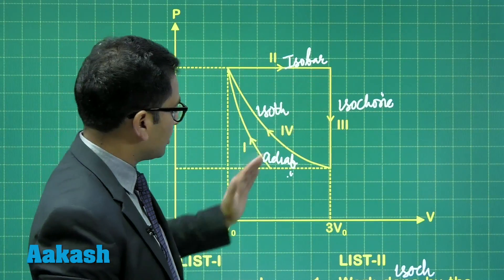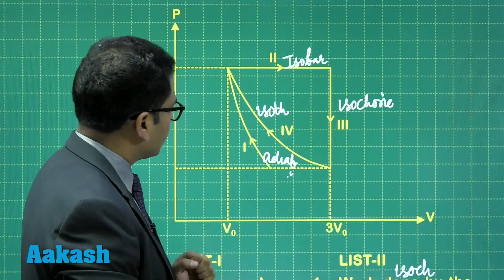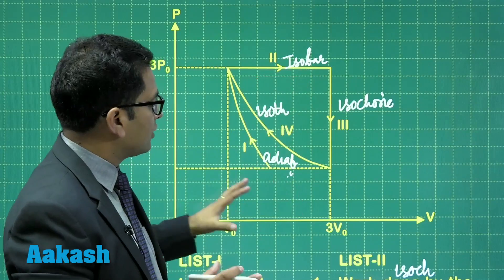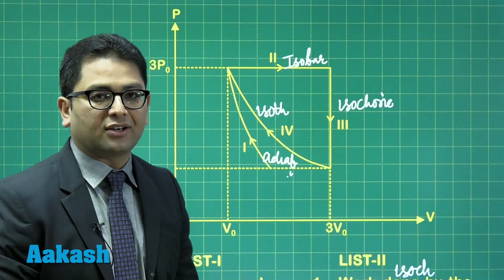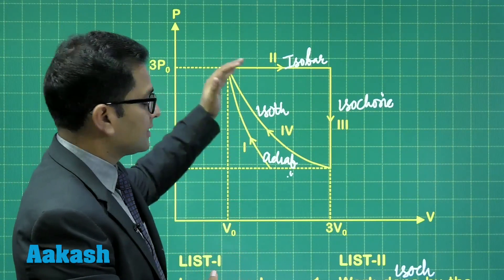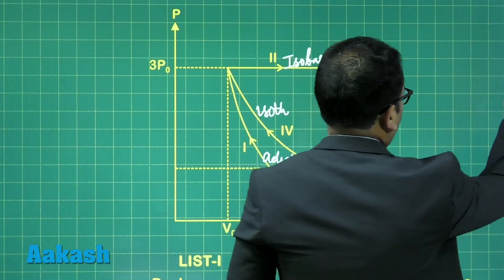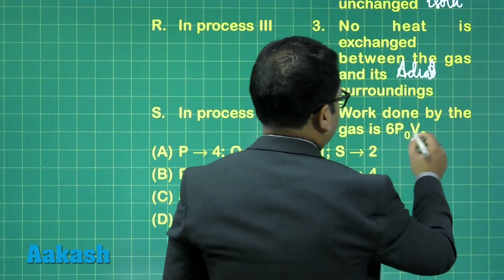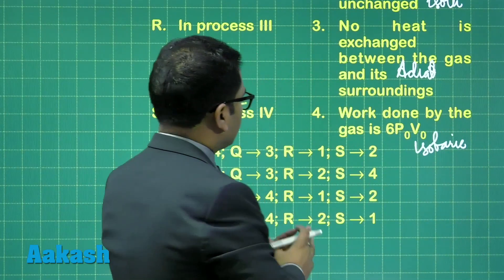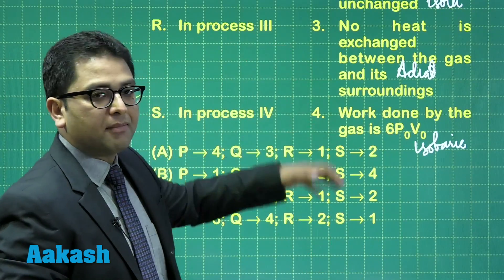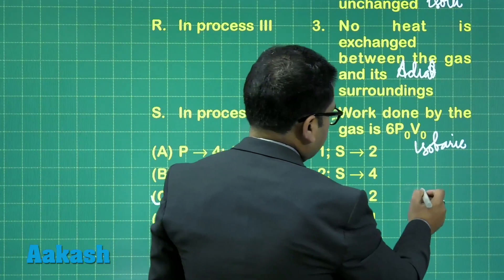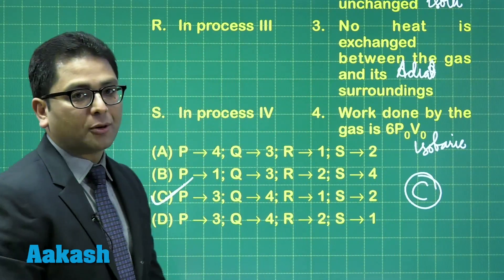Work done by the gas is 6P0V0, which corresponds to the isobaric process. For isobaric, pressure is 3P0 and volume change is 2V0, so work = 3P0 × 2V0 = 6P0V0 from the PV graph area. The other processes have less work. Matching all statements to processes, option C is correct for question 17.